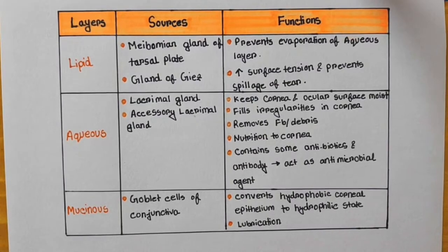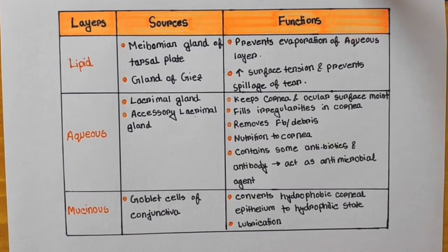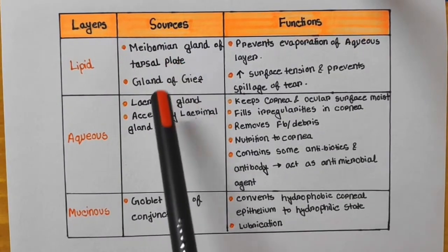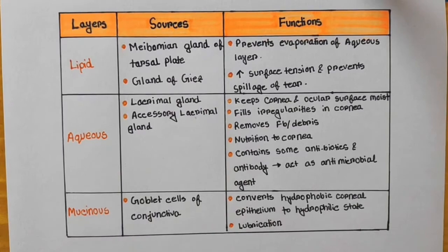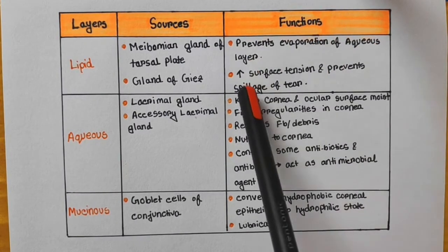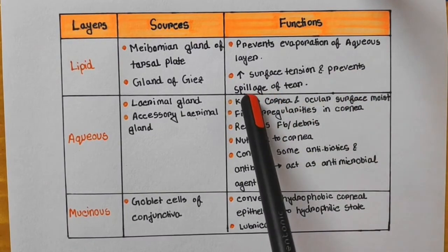Now I will discuss each layer — the sources and the functions also. First, the lipid layer or oily layer. It is the outermost layer and adjacent to atmospheric air. The sources are the Meibomian gland of the tarsal plate and the gland of Zeis, which is a gland of the eyelid. The functions are: it prevents evaporation of the aqueous layer, it increases surface tension, and prevents spillage of tears.